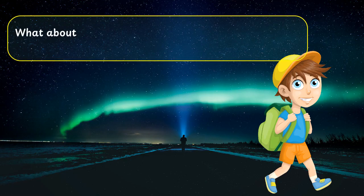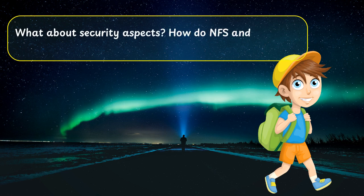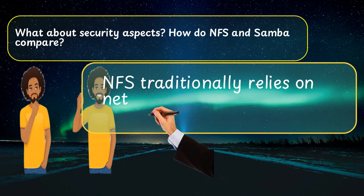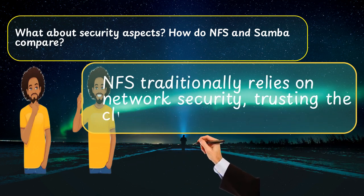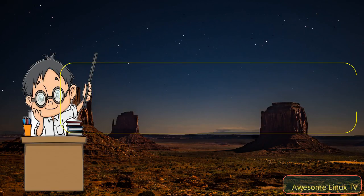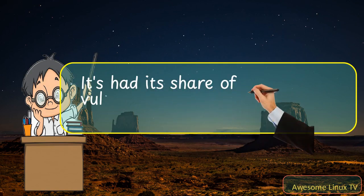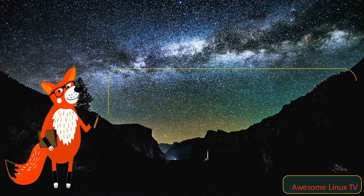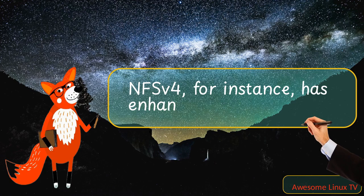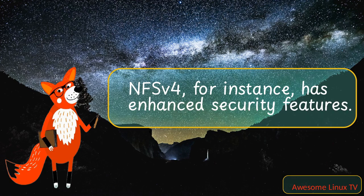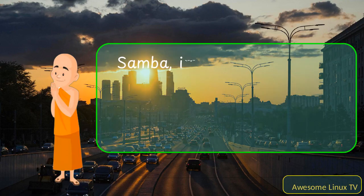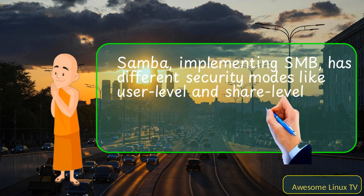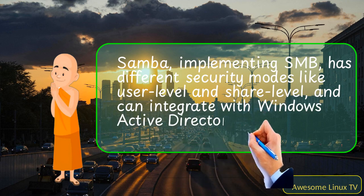What about security aspects — how do NFS and Samba compare? NFS traditionally relies on network security, trusting the client machines, and it's had its share of vulnerabilities and improvements over its various versions. NFSv4, for instance, has enhanced security features. Samba, implementing SMB, has different security modes like user-level and share-level, and can integrate with Windows Active Directory for authentication.